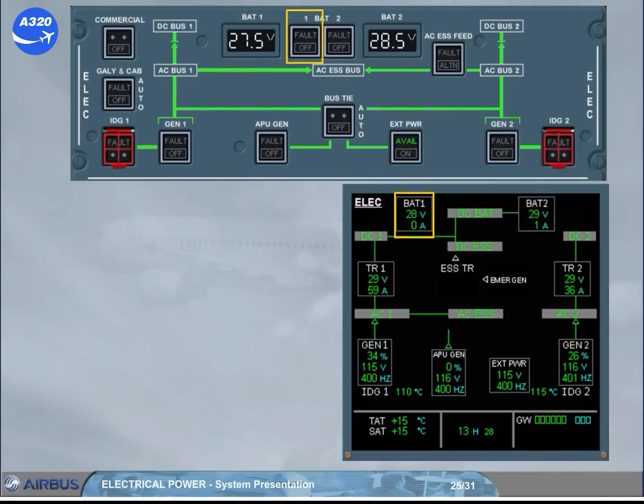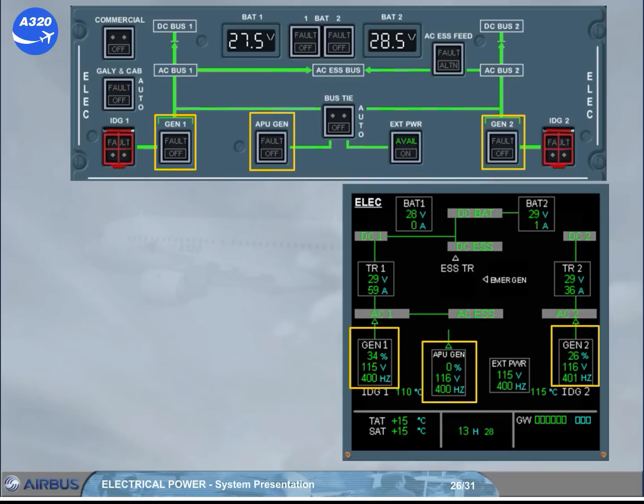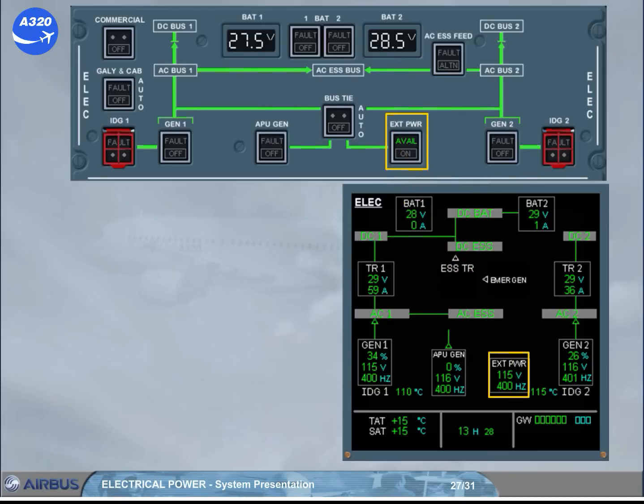Each battery is controlled by a push-button switch. Both main generators and the APU generator are controlled by their associated push-button switch. External power is also controlled by a push-button.